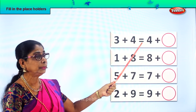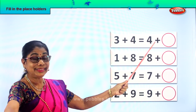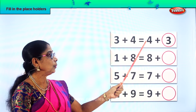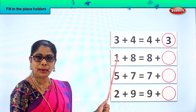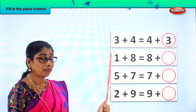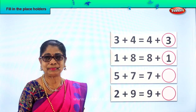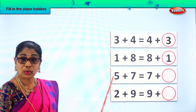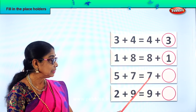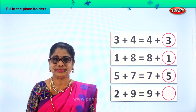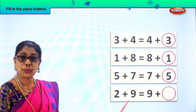Look: three plus four. What is three plus four equal to? Three plus four is equal to four plus three. Look carefully: one plus eight. One plus eight is equal to eight plus one. Next: five plus seven. What is five plus seven equal to? Five plus seven is equal to seven plus five.